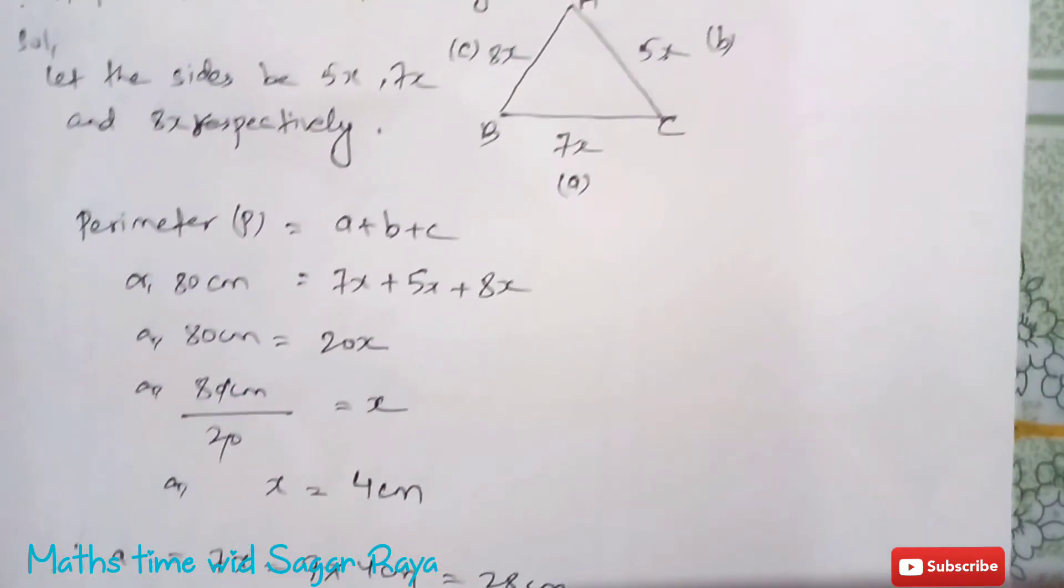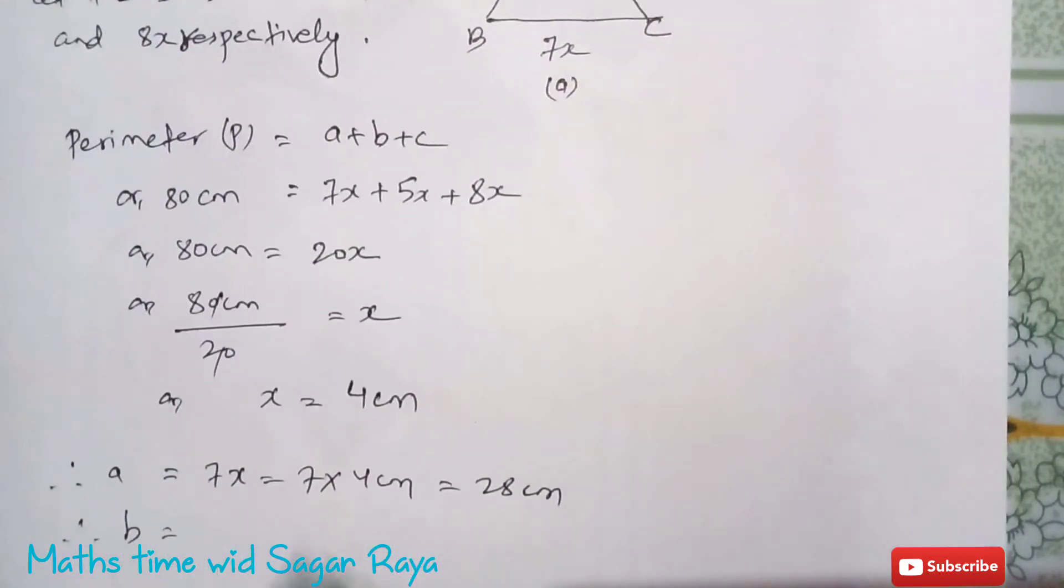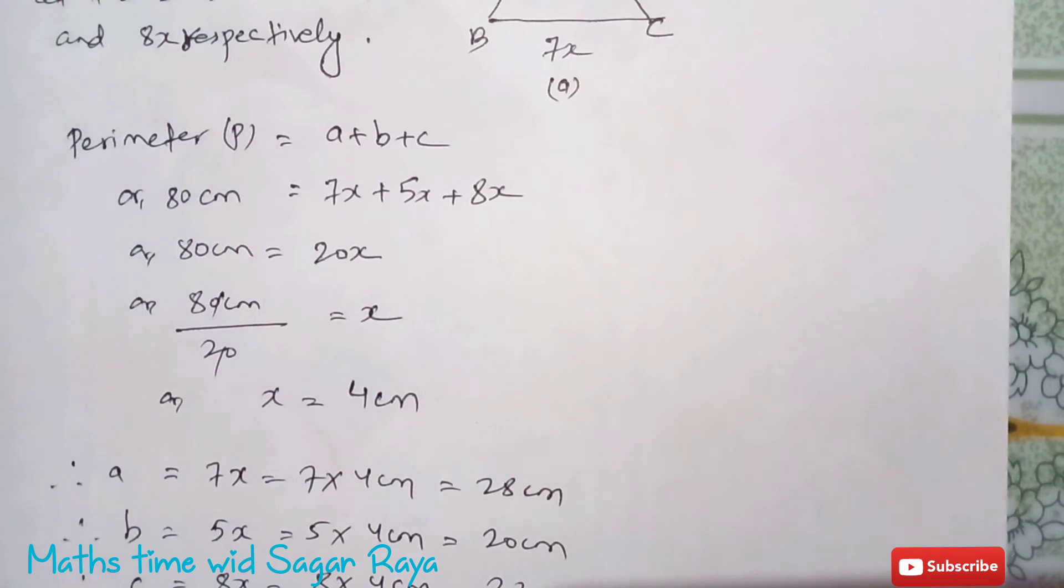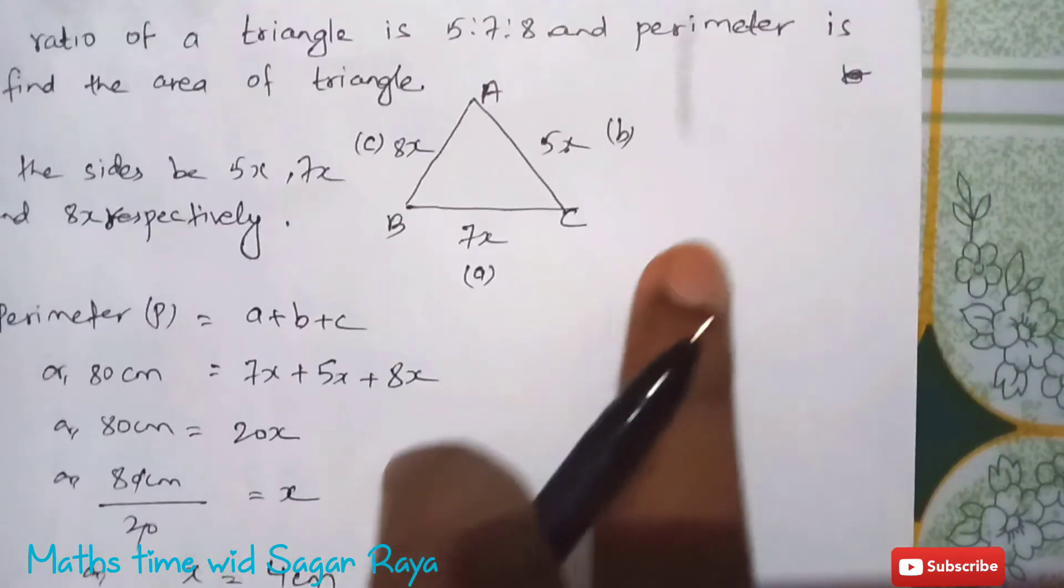And then c equals to 8x, so 8 into 4 cm is equal to 32 cm. Now since all the sides are different here, so we have to understand that it is a scalene triangle.